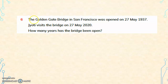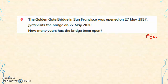The Golden Gate Bridge in San Francisco was opened on 27th May 1937. Jyoti visits the bridge on 27th May 2020. From 27th May 1937 to 27th May 1938 is one year. Similarly, 27th May 1937 to 27th May 1938 is one year — just like 1st January 2020 to 1st January 2021 is one year.